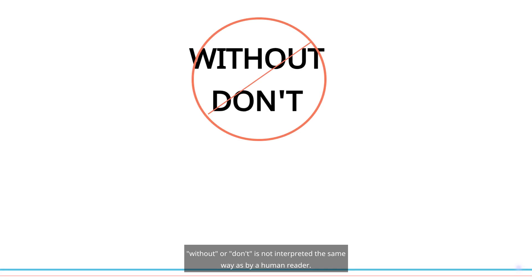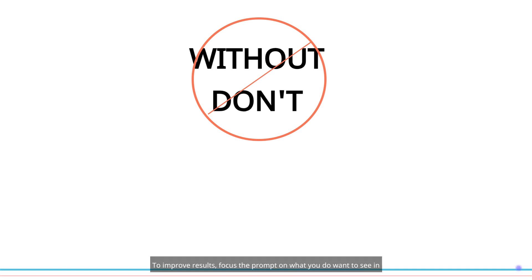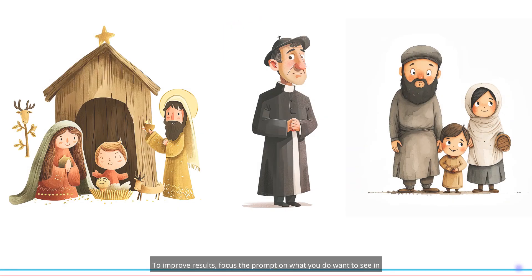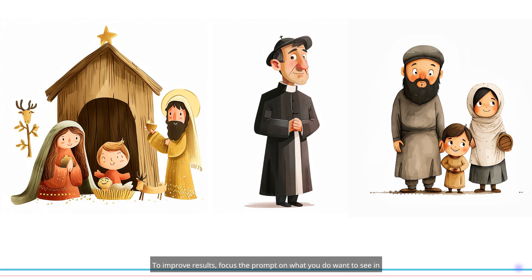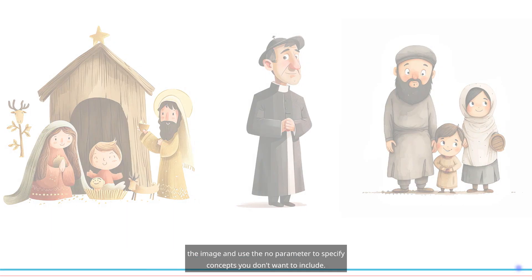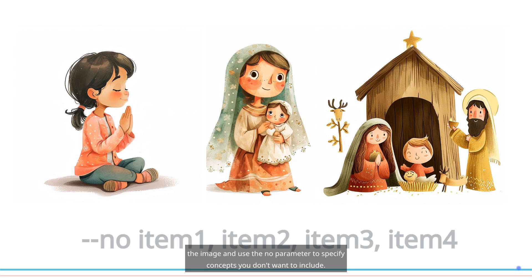"Without" or "don't" is not interpreted the same way as by a human reader. To improve results, focus the prompt on what you do want to see in the image, and use the No Parameter to specify concepts you don't want to include.